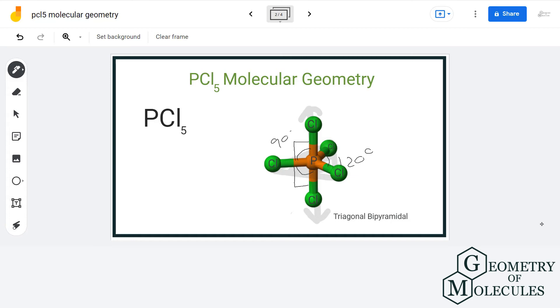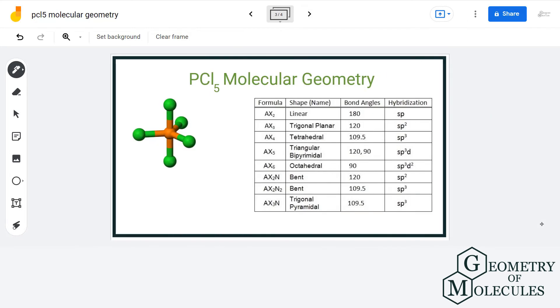Let us now use AXN notation method to see if we are on the right track. Here, A stands for the central atom, X is the number of atoms forming bonds with the central atom, and N is the number of lone pairs of electrons present on the central atom.